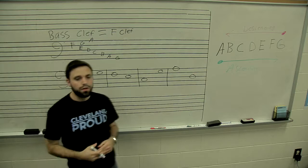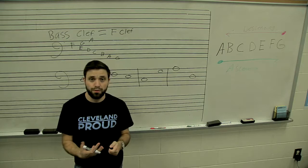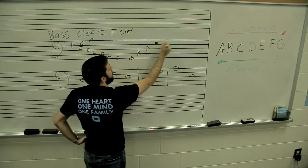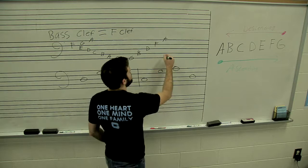So all of those notes are in the bass clef. It looks different from the treble clef. So for example, your line notes in the bass clef will be G, B, D, F, and A.